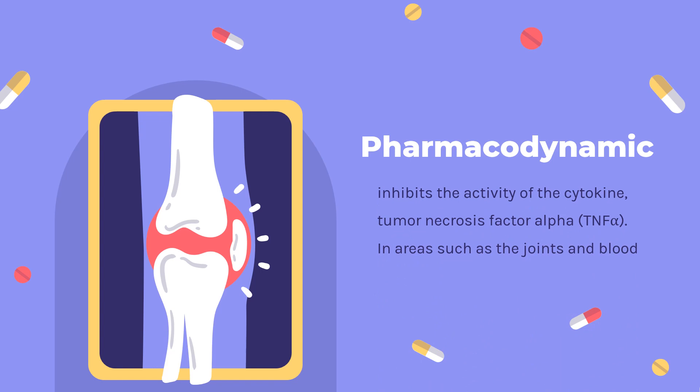Pharmacodynamics: Golimumab inhibits the activity of the cytokine tumor necrosis factor alpha (TNF-alpha). In areas such as the joints and blood, increased TNF-alpha is associated with chronic inflammation seen in patients with rheumatoid arthritis, psoriatic arthritis, and ankylosing spondylitis. Thus Golimumab decreases inflammation in these conditions.